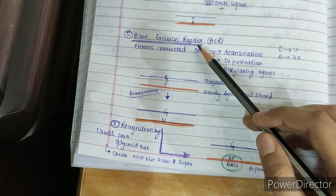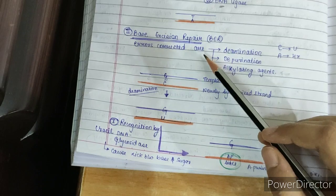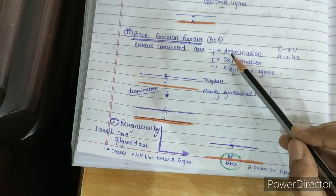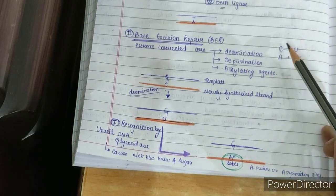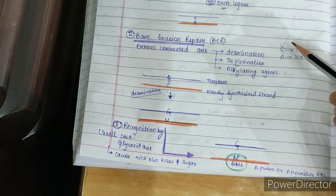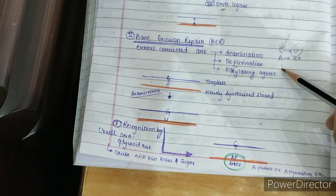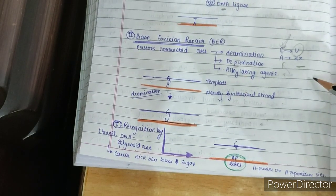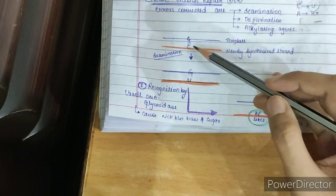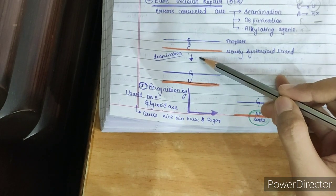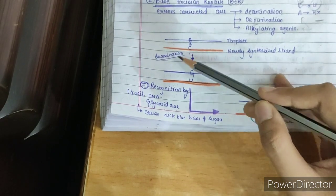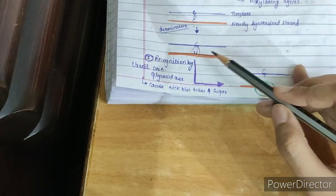The second type of DNA repair mechanism is base excision repair (BER). It corrects errors caused by deamination, depurination, or alkylating agents. For example, deamination by nitrous oxide converts cytosine to uracil, or adenine to hypoxanthine. In this example, the template strand is shown in blue and the newly synthesized strand in orange. Normally guanine pairs with cytosine, but due to deamination it has been converted to uracil — this needs correction.